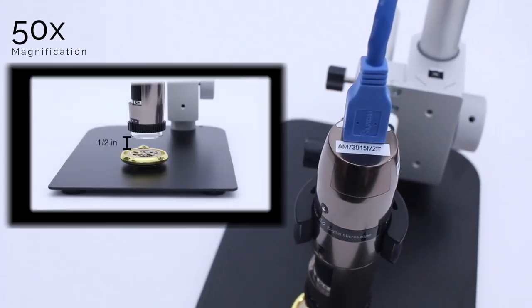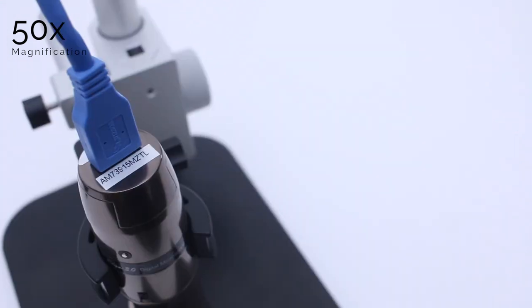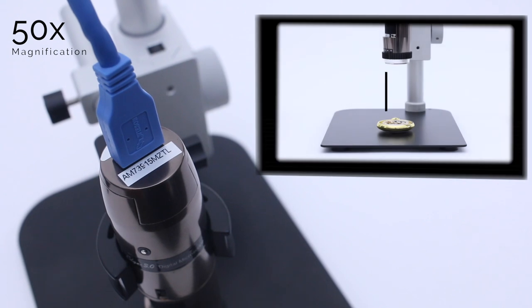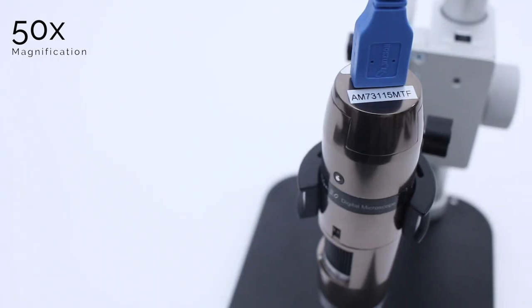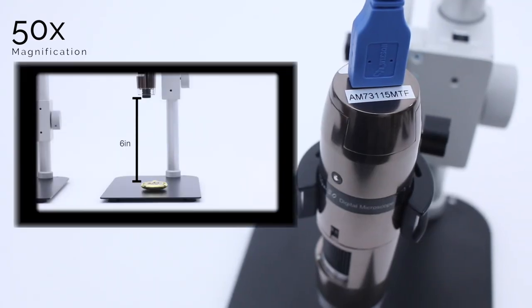Over here is our standard distance model. It's nearly touching the subject. This one is our long working distance model at 50x and it's about two inches away from the subject. Over here is our far working distance model at 50x and it's over six inches away from the subject.